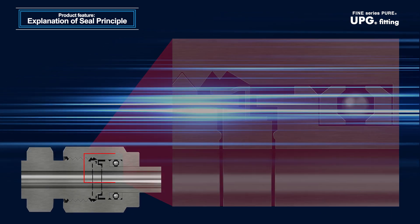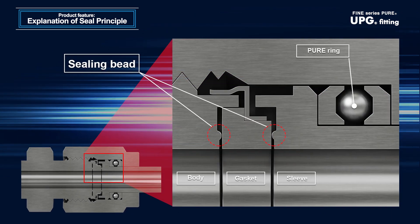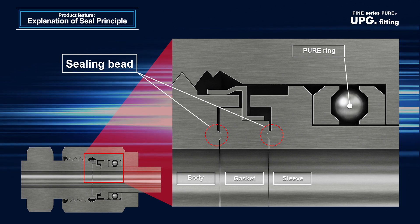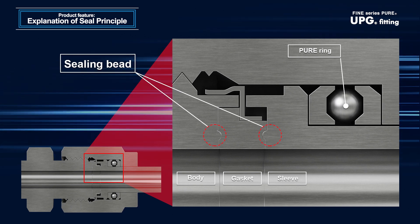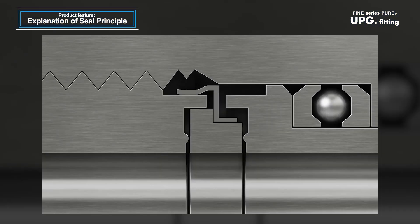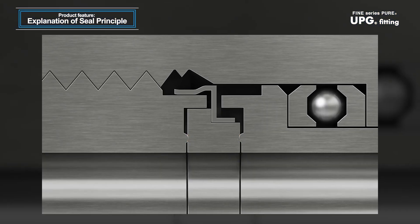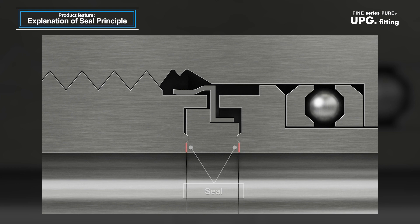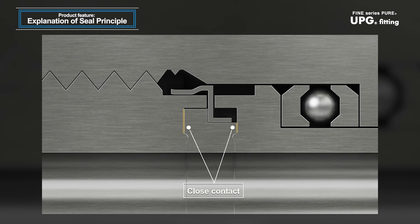Turning the nut clockwise advances the sleeve. The pure ring built-in the nut absorbs the turning force, transmitting only the thrust force to the sleeve. This allows the body and the sleeve edge part to contact and plastically deform the gasket for perfect sealing.